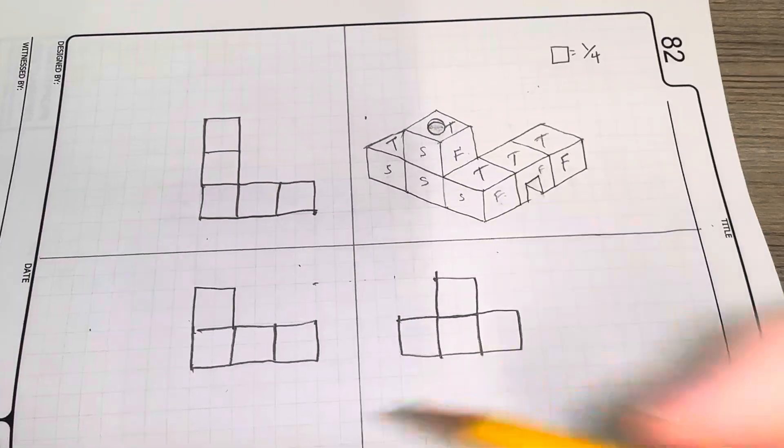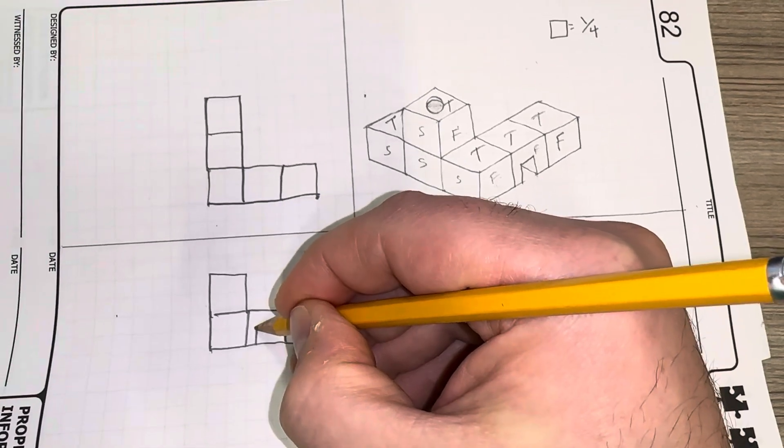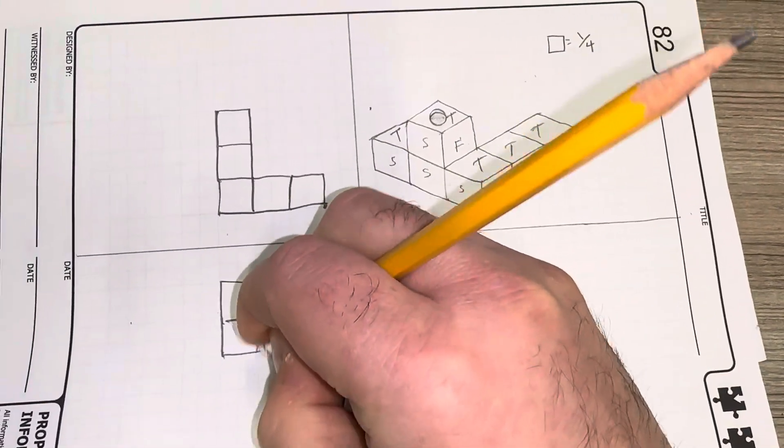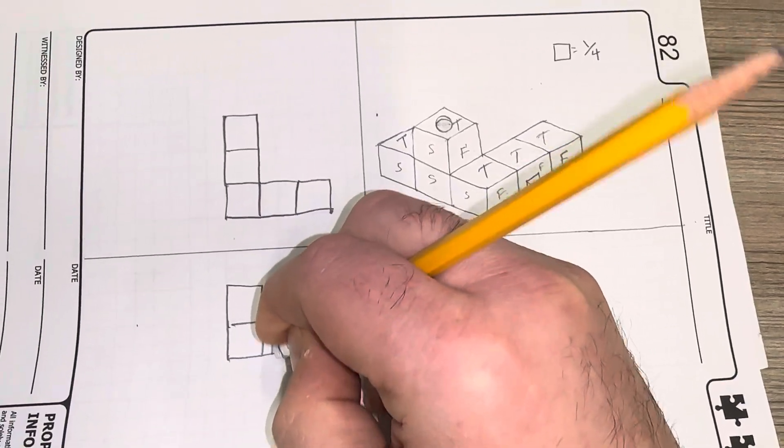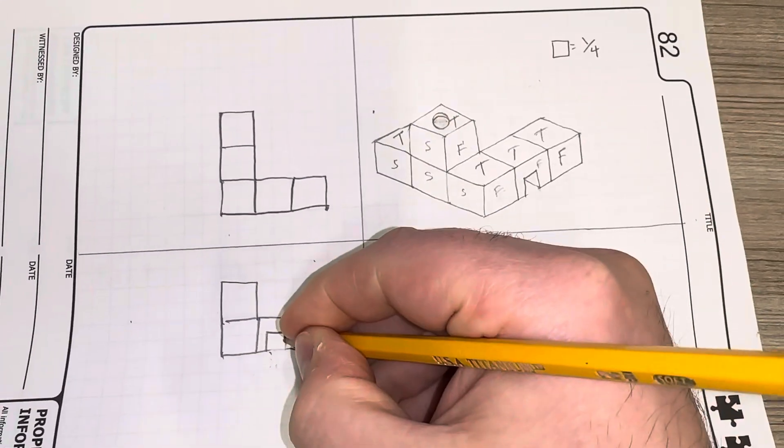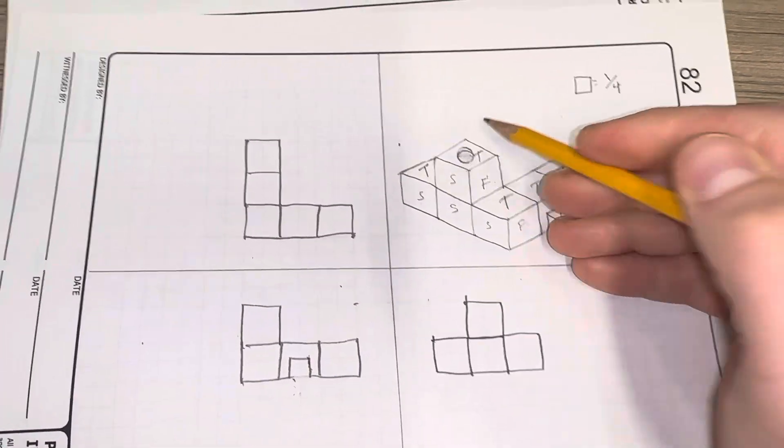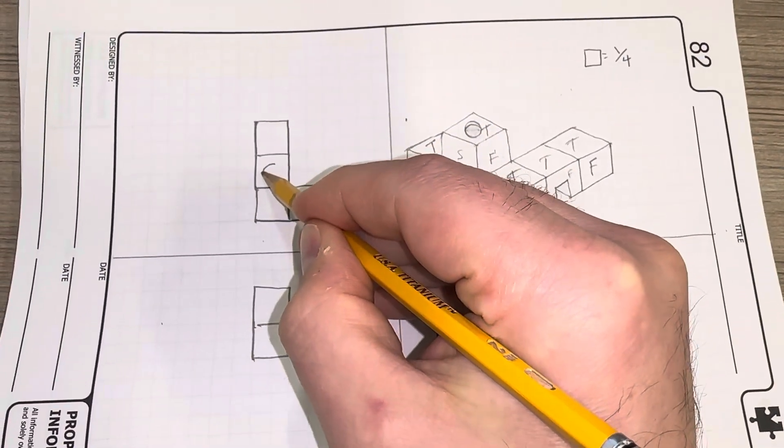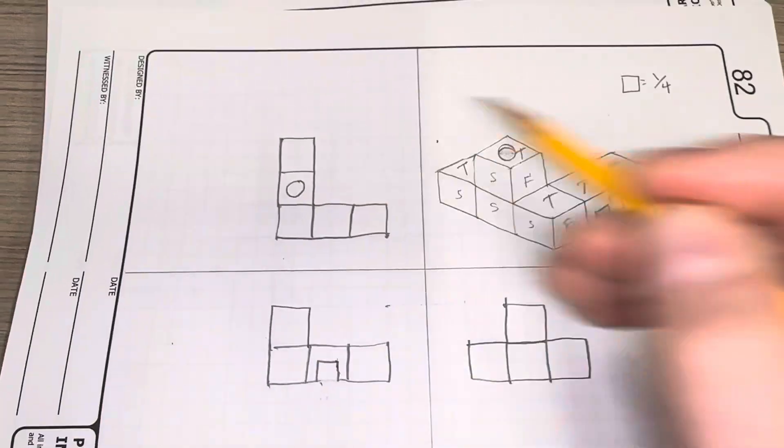Now from my front view, we can see on this one, I'm going to see that little channel cut, which I'm going to erase there. And from the top here, we're going to notice on this one right here, I'm going to see that hole.